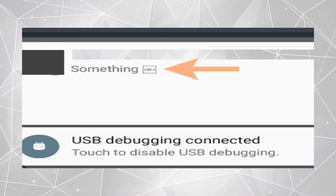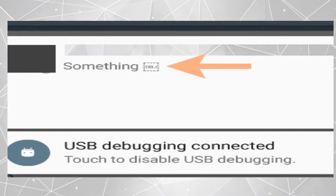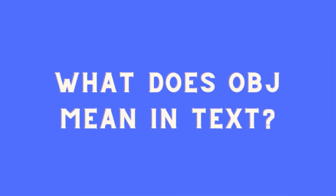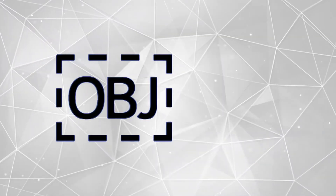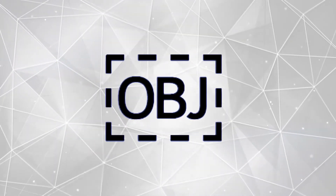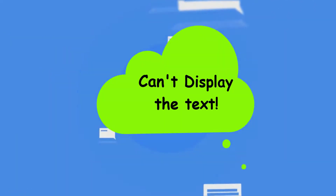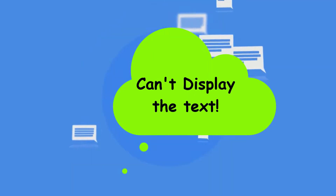Have you ever seen a dotted box where you see the acronym OBJ in text? OBJ in a dashed box is an acronym for Object Replacement Character. It is the replacement of a special character or emoji that your device can't display on the screen.